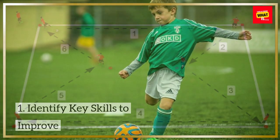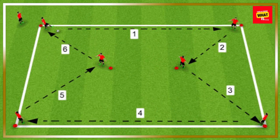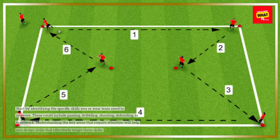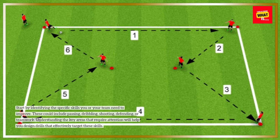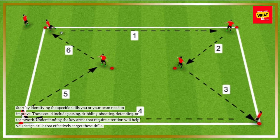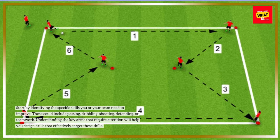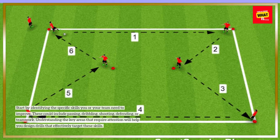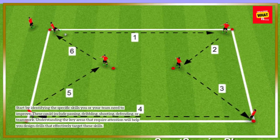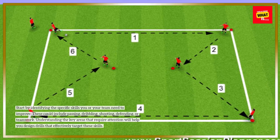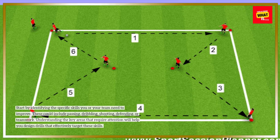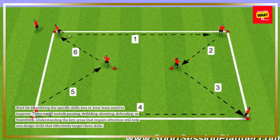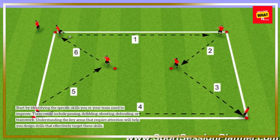Identify Key Skills to Improve. Start by identifying the specific skills you or your team need to improve. These could include passing, dribbling, shooting, defending, or teamwork. Understanding the key areas that require attention will help you design drills that effectively target these skills.